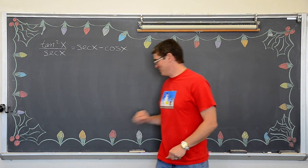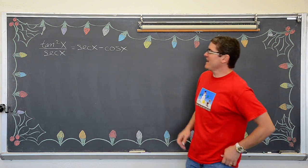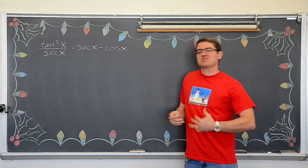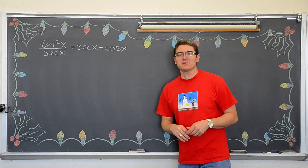BAM! Mr. Tarrou! Let's do some more proofs. We have tangent squared x over secant of x equals secant minus cosine.